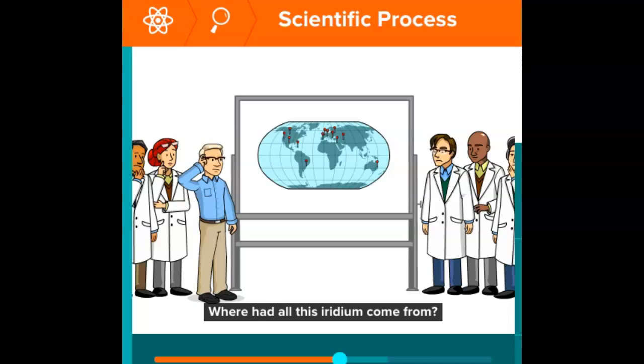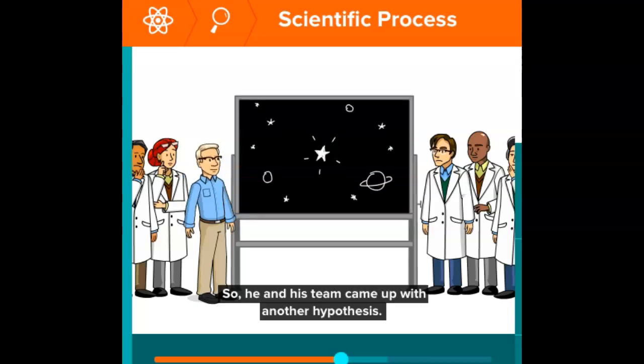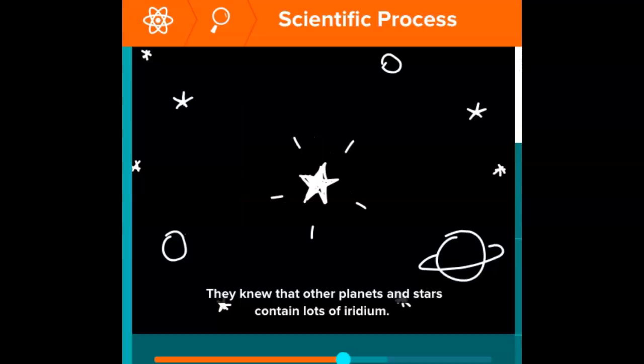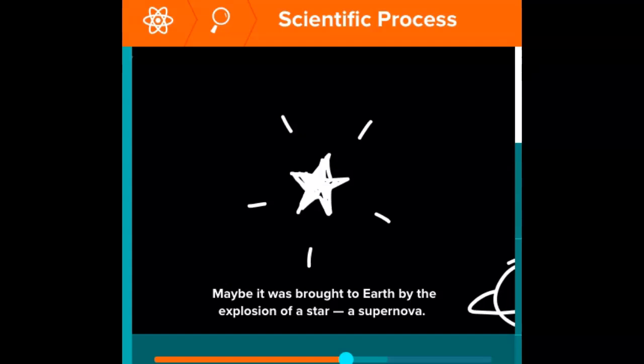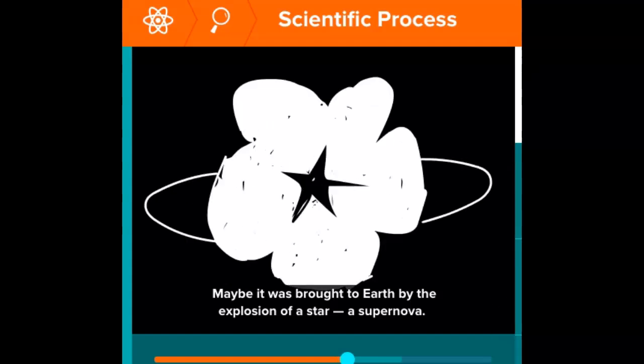Where had all this iridium come from? So he and his team came up with another hypothesis. They knew that other planets and stars contained lots of iridium. Maybe it was brought to Earth by the explosion of a star—a supernova.